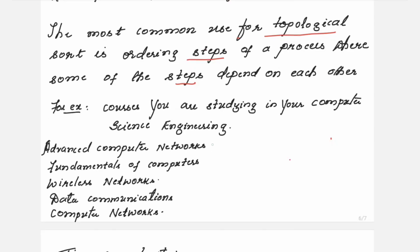When you are studying courses in your engineering, suppose these are the courses: advanced computer networks, fundamentals of computers, wireless networks, data communications, and computer networks. These must be studied in some sequence. You cannot study advanced computer networks without first studying fundamentals of computers. The correct topological ordering would be: fundamentals of computers, data communications, computer networks, advanced computer networks, then wireless networks.